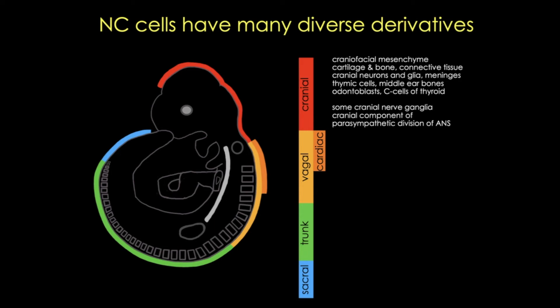The neural crest of the cranial region migrates into the pharyngeal arches, forming ectomesenchyme that contributes tissues to the face — including cartilage, bone, and connective tissue — which in the body region are normally derived from mesoderm. A great deal of the face is formed by neural crest. They also form the middle ear bones and odontoblasts, which give rise to the dentin of the teeth, as well as some cranial nerve ganglia and parasympathetic neurons.